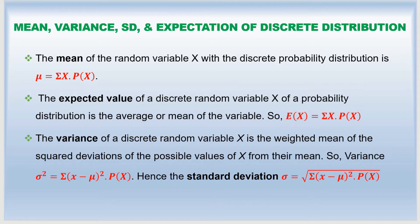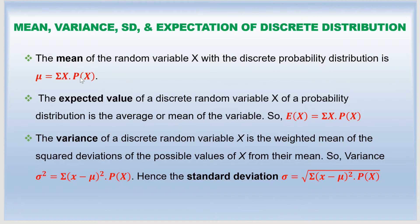Welcome to this video. We are going to explore the mean, variance, standard deviation, and expectation of a discrete probability distribution. First, we will quickly look at the formulas to calculate each of these. The mean of the random variable x with a discrete probability distribution is given by: mean equals the sum of x times the probability of x.